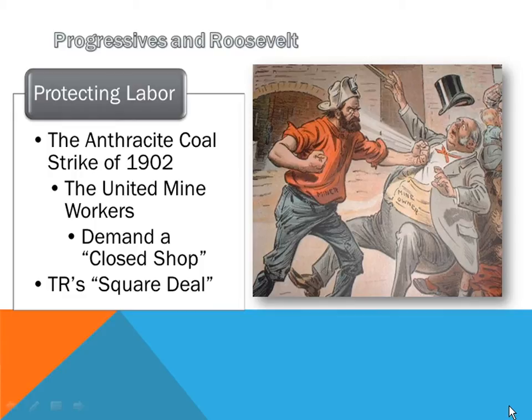His policy of a square deal comes from his interaction in resolving the anthracite coal strike of 1902. In this coal strike, the United Mine Workers in Philadelphia were refusing to work in one of the largest coal mines in the nation. Anthracite is a very important type of coal — it's very dense, which means it burns especially long. A little bit goes a long way.